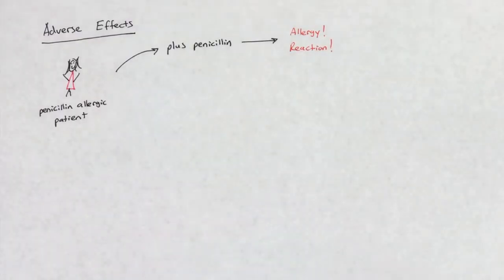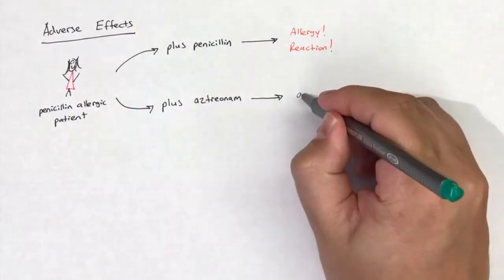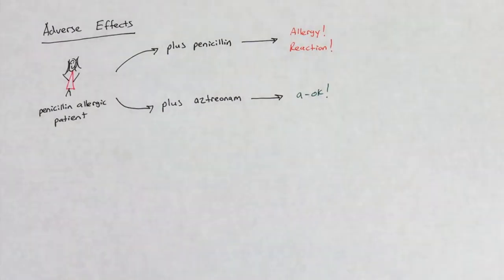A major use of aztreonam is in the treatment of gram-negative bacterial infections in patients that cannot tolerate other beta-lactam drugs due to an allergy.